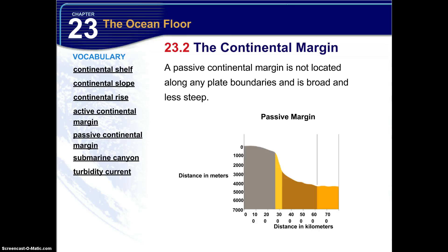Now a passive continental margin is not located along any plate boundary, and is broad and less steep. So again, we have the continental margin that has the shelf and the slope, but in this case, with the passive continental margin, we have a continental rise, not a deep sea trench. And it goes out into the ocean basin, which includes the abyssal plain and several other features.